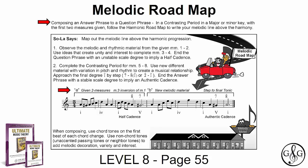In the first four-measure phrase A, we see the first two given measures. In measure three, there is an inversion of measure one ending with a half cadence. In the second four-measure phrase B, we see new melodic material and the leading tone with a step to the final tonic. This is the melodic roadmap, and we're going to see how all of that is put together — this is from level eight, page 55.